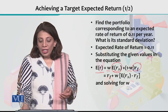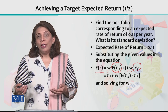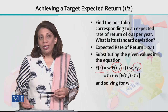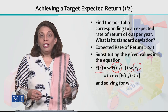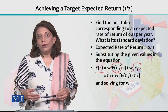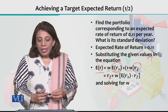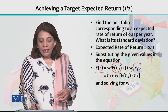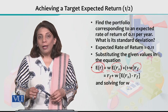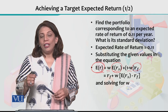We will solve this particular equation. For any unknown information, you can calculate the required values. In this particular section, we want to discuss that if you want to achieve a certain expected rate of return, then you will have to decide the other values.